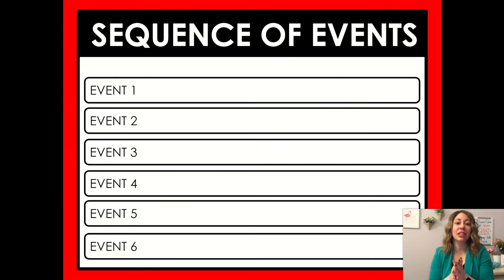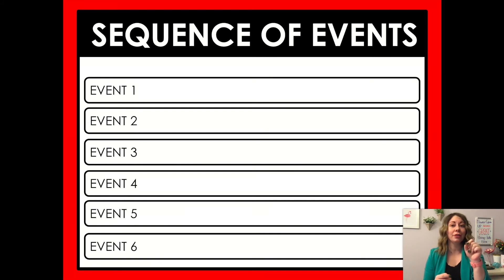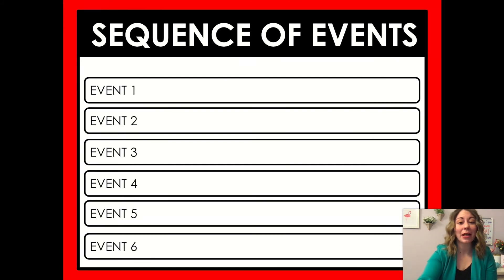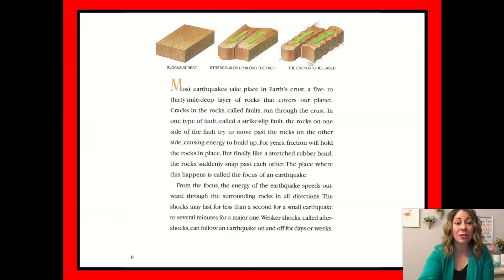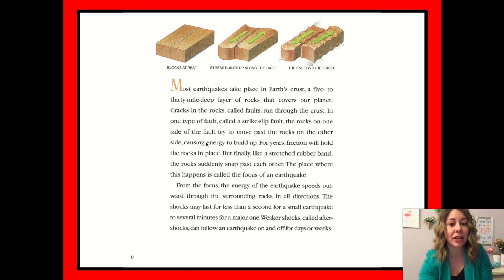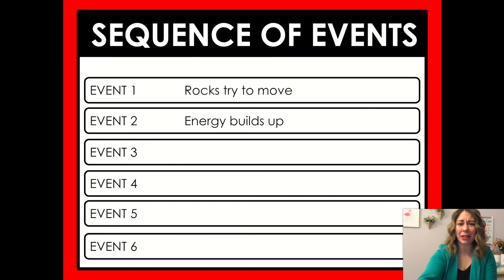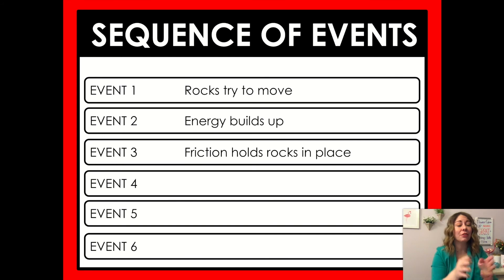Let's pause and look at our sequence of events graphic organizer. This is just a list where you list things in order — you could literally write one, two, three on paper. The first thing that happens is the rocks try to move. The text says rocks on one side of the fault try to move past the rocks on the other side, causing energy to build up. For years, friction holds the rocks in place. Friction is when things are rubbing together — like rubbing your hands together and feeling warmth. Because of so much friction, the rocks can't slide past each other.